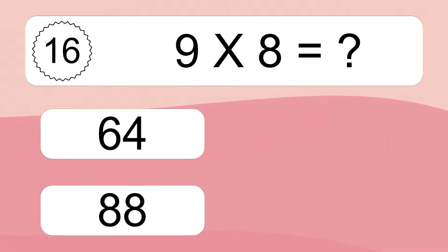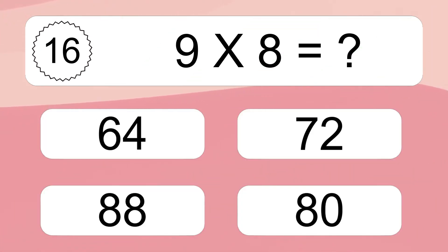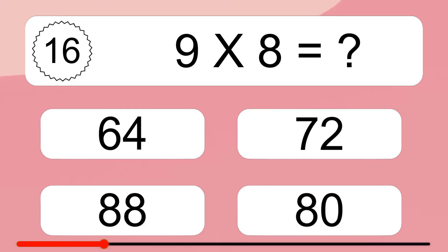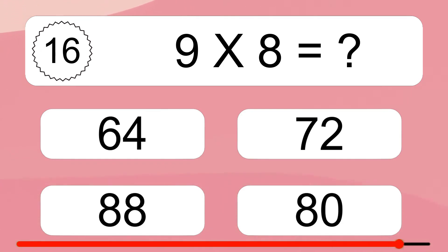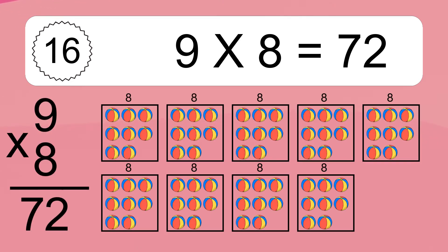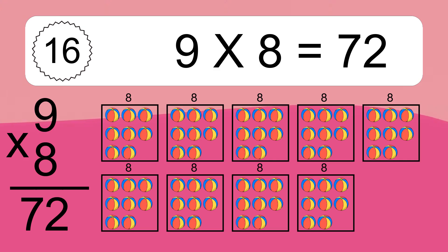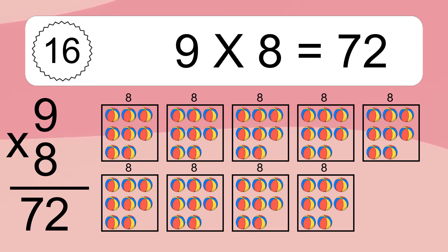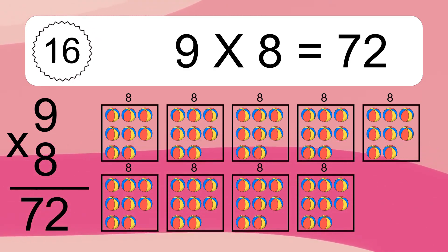9 times 8 equals what? 9 times 8 equals 72. We have 9 boxes, and each box has 8 colorful balls inside. If you count all the balls in all the boxes together, you will have 9 times 8 balls. This equals 72 balls.